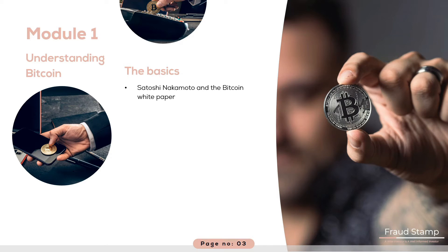In January 2009, the first Bitcoin currency transaction occurred between two computers owned by Nakamoto and the late Hal Finney, a developer and an early cryptocurrency enthusiast. To this day, no one knows who Satoshi Nakamoto really is. However, because of the decentralized nature of the platform, it is not considered important to know who he is. Bitcoins aren't printed like dollars or euros — they're produced by computers all around the world using free software and held electronically in programs called wallets.